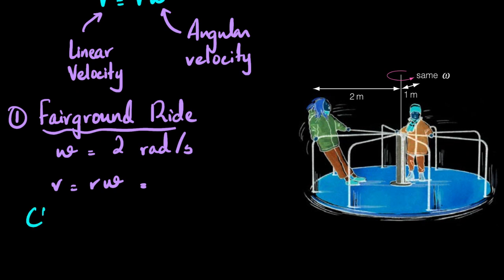For the child, v equals r omega, so v would be the radius. Now you need to keep in mind that the girl is at a greater distance than the child. This is the center, the point about which this entire merry-go-round is rotating. The distance from the center of the child is one meter, whereas the distance of the girl is two meters.